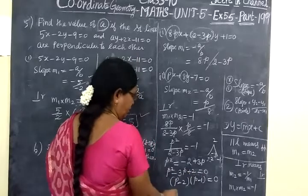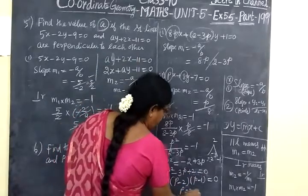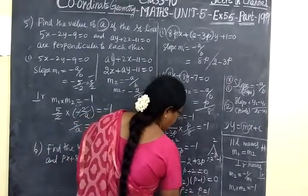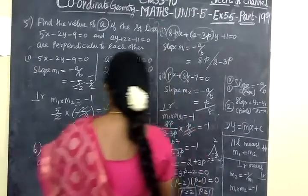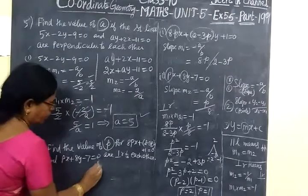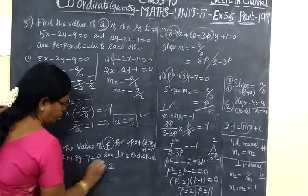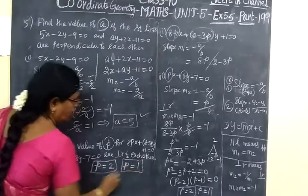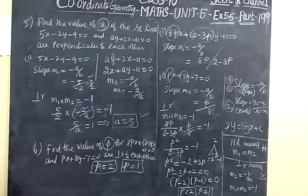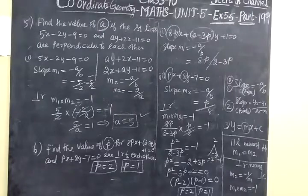So the final answer is P equal to 2, P equal to 1. So we got 2 answers. The answer for this question is P equal to 2, one answer, then P equal to 1 another answer. Now we check the answer: P equal to 1 comma 2. So it is correct.